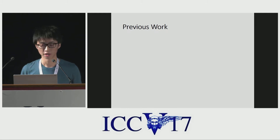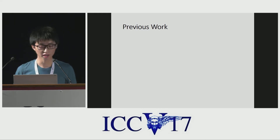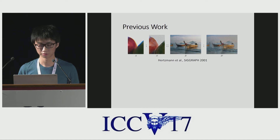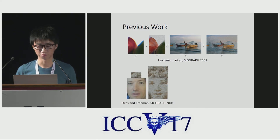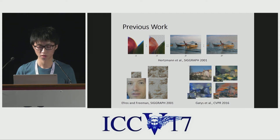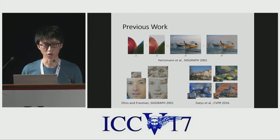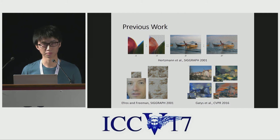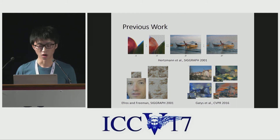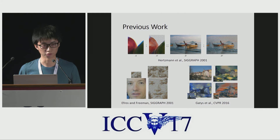The history of style transfer can date back to more than 15 years ago. Some earliest works include the image analogy algorithm by Herzmato and the image quilting algorithm by Efros and Freeman. Recently, Gatys et al. proposed the first neural algorithm on style transfer, which reignited interest in this field and inspired many follow-up works on using neural networks to perform style transfer.